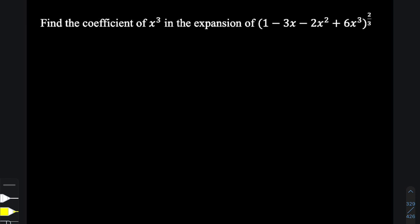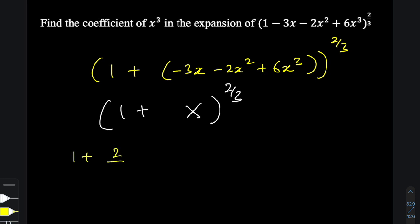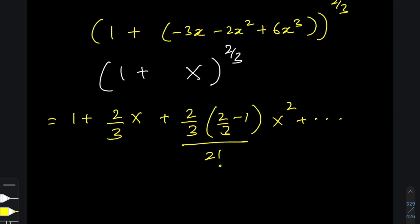We're going to start by assuming that this expansion is actually a binomial expansion with a fractional power. I'm going to write this expression as one plus the rest of the terms — think of it as one plus some capital X, raised to the power of two-thirds. We know how to expand a binomial with a fractional power: it goes like one plus (2/3)X plus (2/3)(2/3 − 1) over 2! times X squared, and so on.